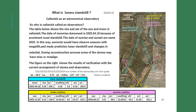So why is Callanish called an observatory? The table below shows the rise and set of the sun and moon at Callanish. The date of moonrise and moonset shown is April 18, 2025, because of the prominent lunar standstill. The dates of sunrise and sunset are also from 2025. In this way, ancients would have observed seasons with megaliths and made predictions about lunar standstill and changes in celestial events. During reconstruction, some stones may have been misaligned. The figure on the right shows verification results with the current arrangement of stones — S16, S18, S23, S24, S25, S33, S33a — numbered from Historic Scotland.